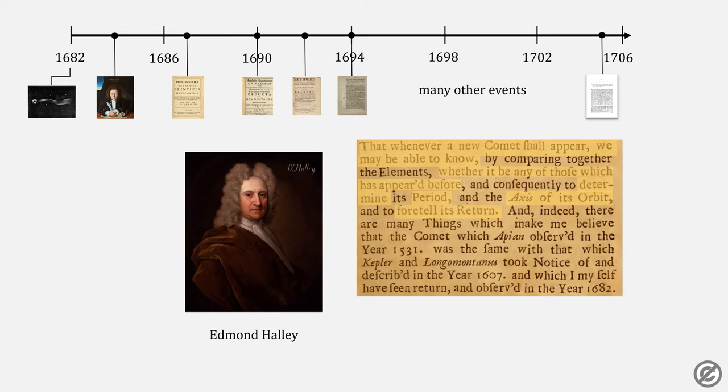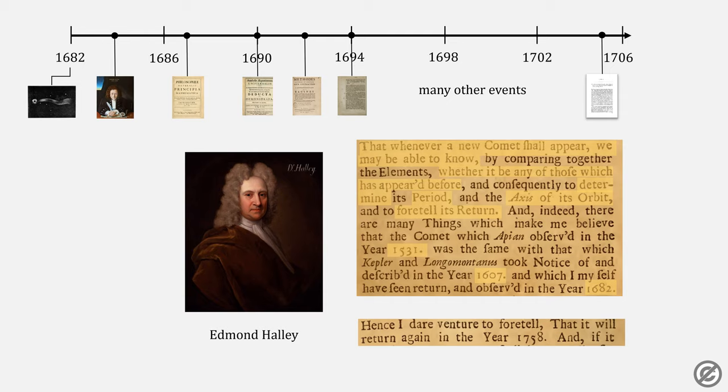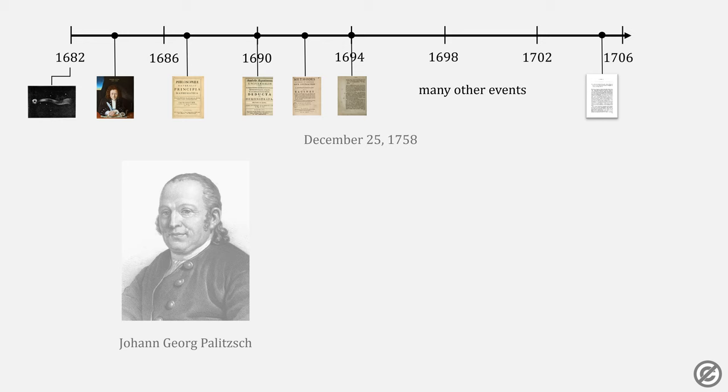He then goes on to note three comet sightings, which were probably the same one, in 1531, 1607, and one that he saw in 1682. Hence, I dare venture to foretell that it will return again in the year 1758.